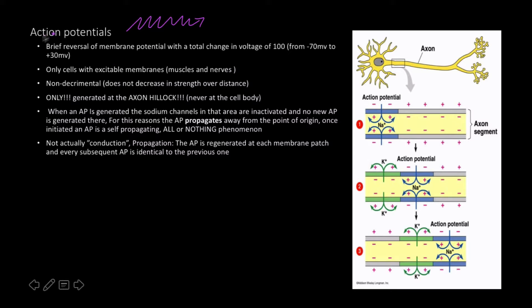With this brief reversal, we go from negative 70 millivolts to positive 30 millivolts. Action potentials only occur in certain types of cells — muscles and nerves. It is a non-decremental signal; it does not get weaker as it travels. It is only generated at the axon hillock, never at the cell body.